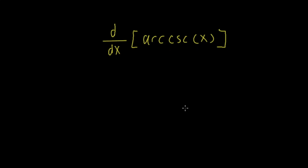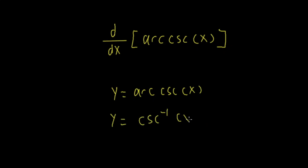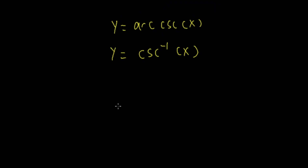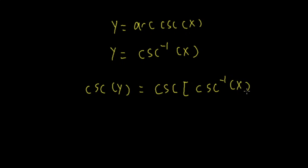Let's find the derivative of arc cosecant x. I will let y equals arc cosecant x, which is the same as cosecant inverse x. To find the derivative of cosecant inverse, it is not easy to work with directly, so I will take the cosecant of both sides: cosecant y equals cosecant of cosecant inverse x. Cosecant and cosecant inverse cancel out, leaving just x on the right side.